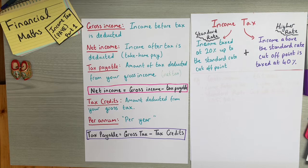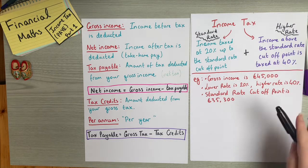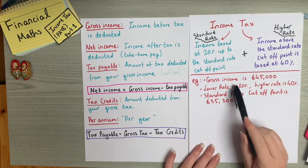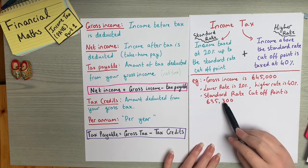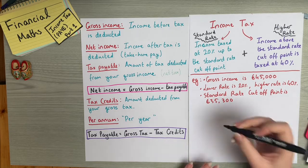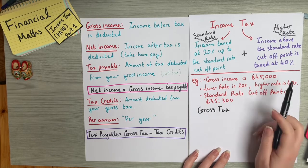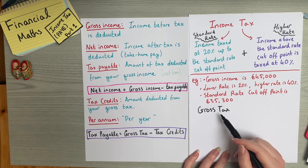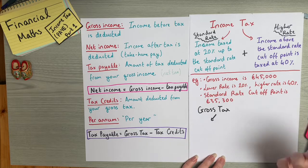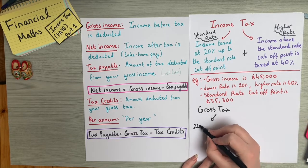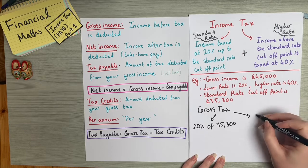Let's look at an example. Someone has a gross income of €45,000. The standard rate is 20%, the higher rate is 40%, and the standard rate cutoff point is €35,300. We need to calculate their gross tax. Since they earn €45,000, which is above the standard rate cutoff point, their gross tax will be made up of 20% of income up to €35,300, plus 40% of income above that.